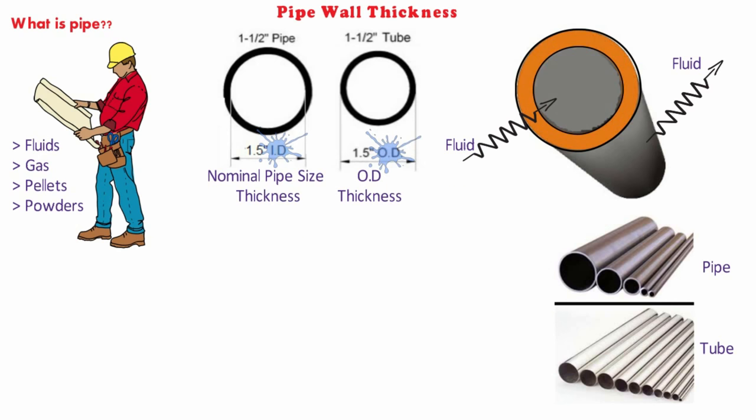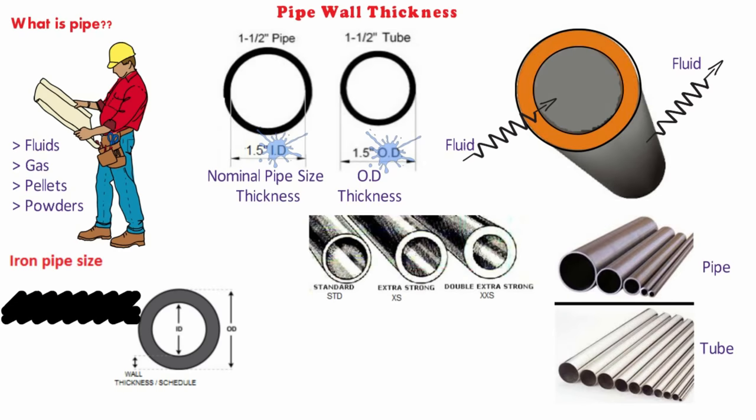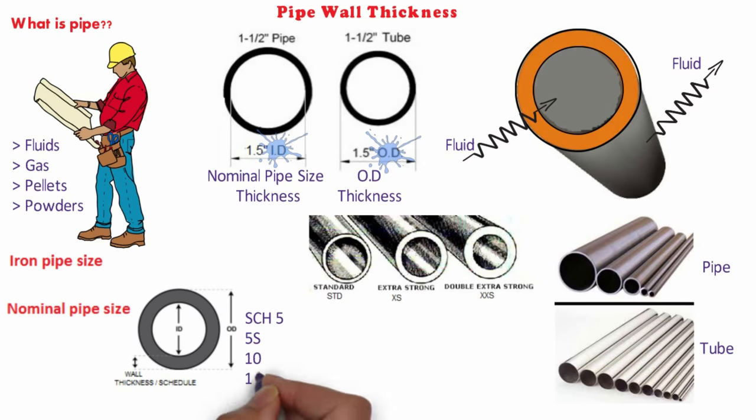Since the difference between the two terms is clear, let's go through the history of pipe thickness or schedule number. At the IPS (Iron Pipe Size) time, only three wall thicknesses were in use: STD (standard), XS (extra strong), and XXS (double extra strong). Later, the American Standard Association surveyed industry and created a system that designated wall thicknesses based on smaller steps between sizes.